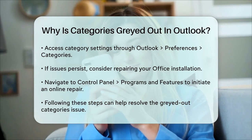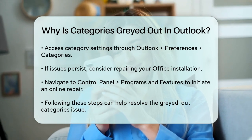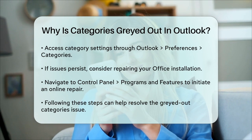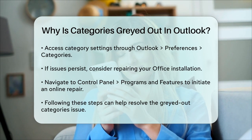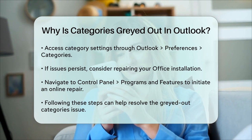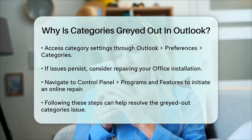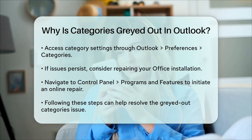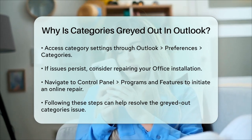By following these steps, you should be able to identify and fix the issue with grayed out categories in Outlook, making it easier to manage your emails and calendar events.